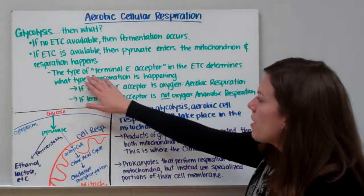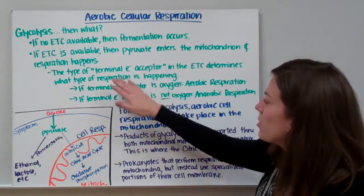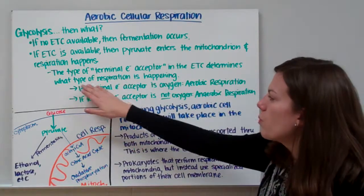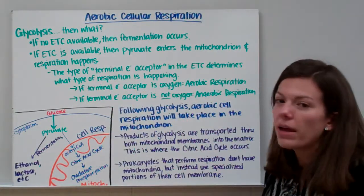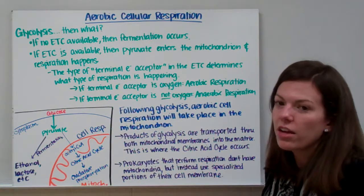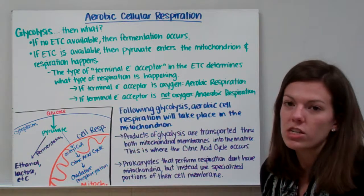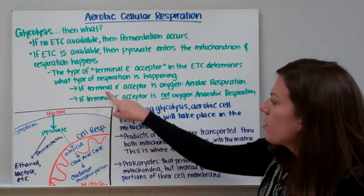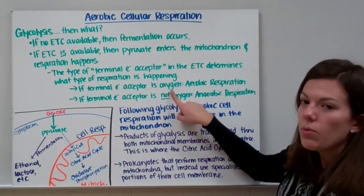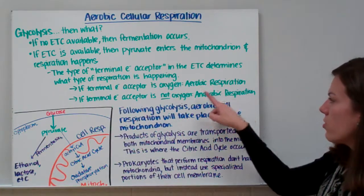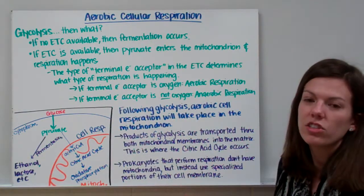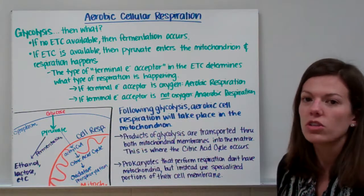This type of terminal electron acceptor in the electron transport chain determines what type of respiration is happening. Based on what your terminal electron acceptor is — the final thing in your electron transport chain — that determines what kind of respiration you'll have. If the terminal electron acceptor is oxygen, we call that aerobic respiration. Aerobic means with oxygen.